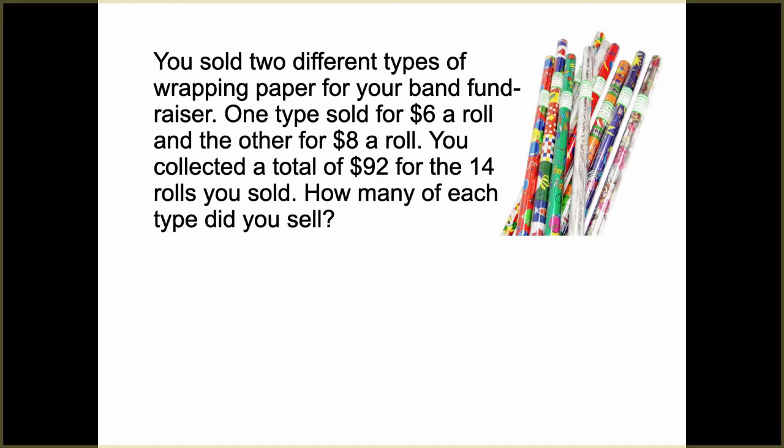With this problem, we're looking at two different types of wrapping paper. This type of word problem, we're going to be setting up a standard form equation. One of those equations is going to talk about money, the other one is going to be talking about total. This is very common. So we have one type sold for $6 a roll and the other for $8 a roll. I'm going to say that X is my $6 roll. Y is my $8 roll.